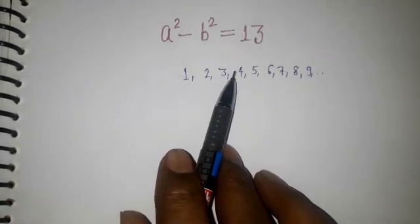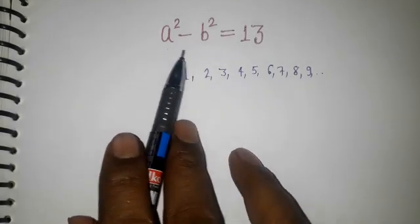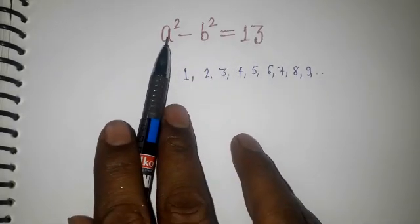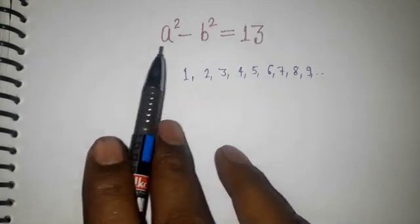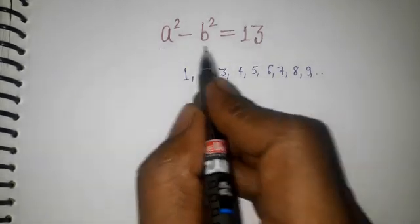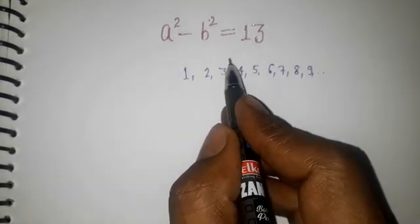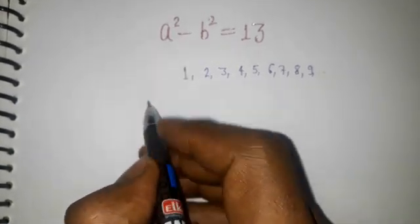In the same way, if I'm taking a as 4, so a² = 16, and b is 3, so 9. 16 - 9 = 7, it is not there. So in the same way, if I'm taking values for a and b, it will take some time.